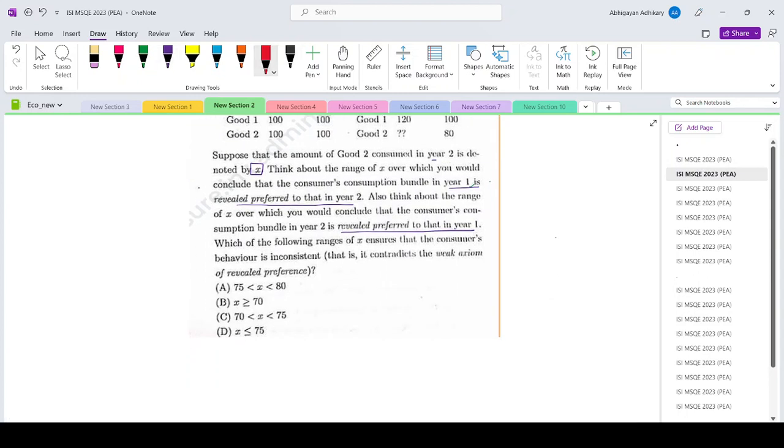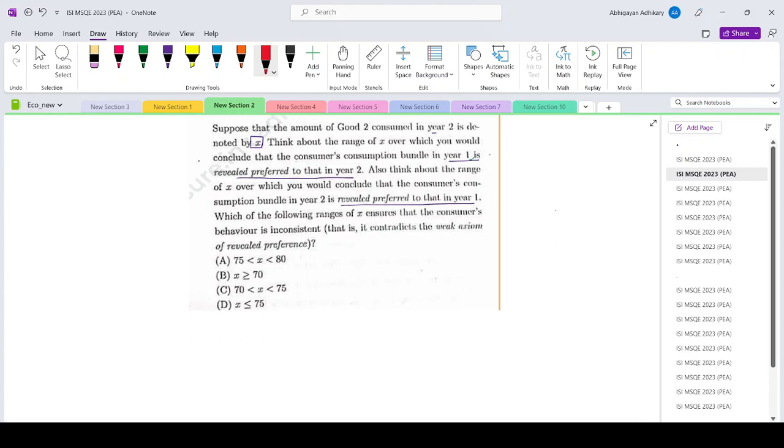So let us tabulate the data first. We have year 1. In year 1, the price of good 1 is 100, price of good 2 is also 100. Quantity consumed for good 1, q1 is 100, q2 is also 100.